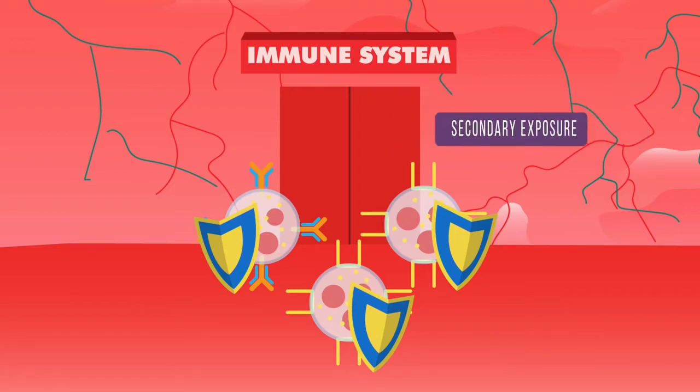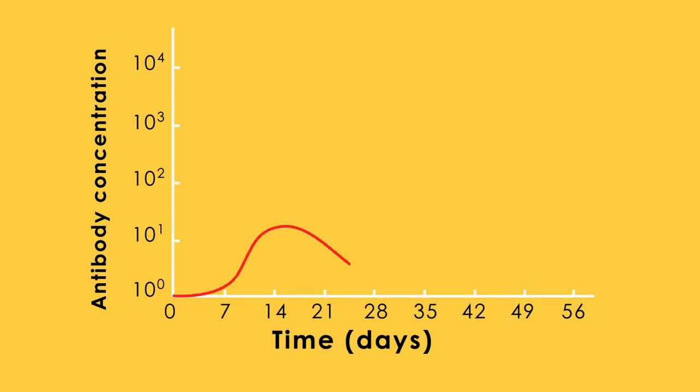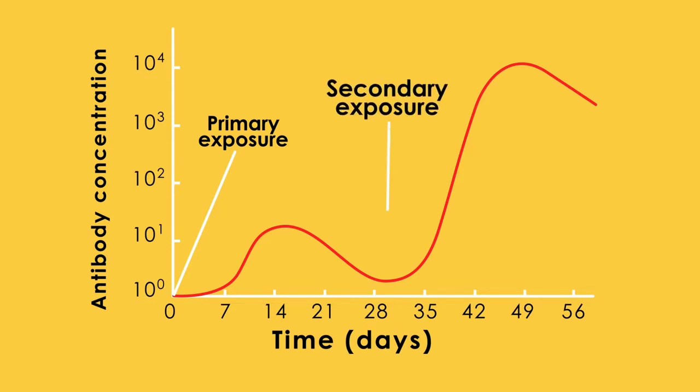The immunological memory helps the immune system respond much more rapidly and effectively than during the primary exposure. As a result, the individual is generally protected from the development of disease symptoms.